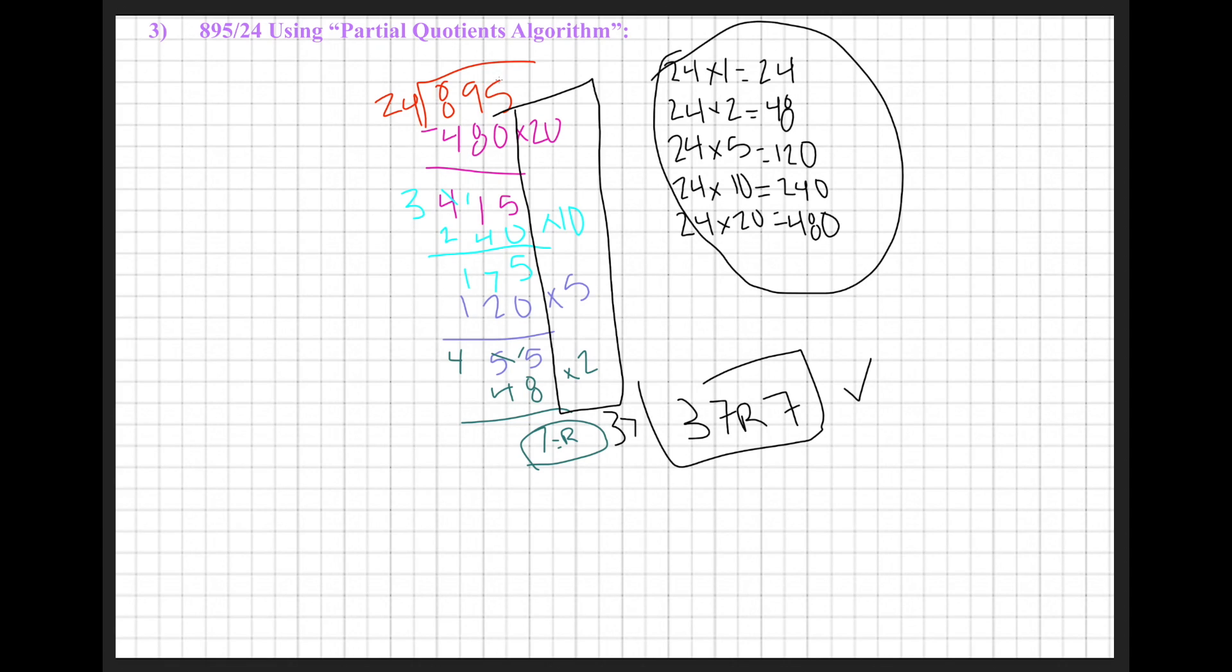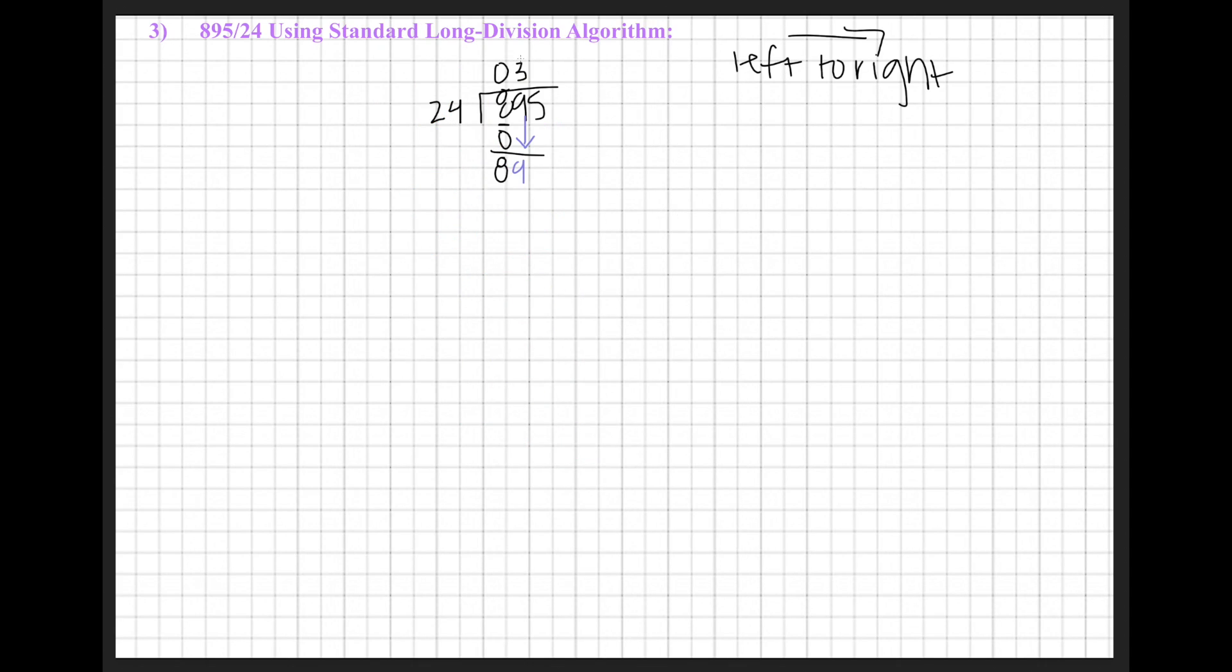The reason that I chose 3 as my number was because my facts that I was comfortable with were 24 times 20 and 24 times 10, which I knew were 240 and 480. So we did still use 20 and 10 together being 30, but we just showed it differently. In the partial quotients algorithm we first did 20 and then we did 10. In this case, we are going to be doing 24 times 3. And to show that, I'm going to show it on the side here: 24 times 3. 4 times 3 is 12, 3 times 2 is 6 plus 1 is 7.